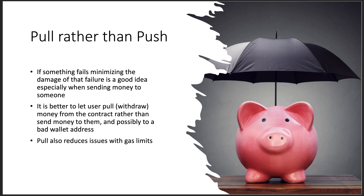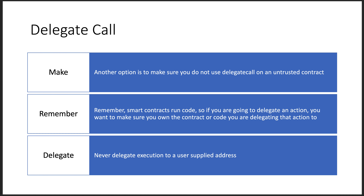Pull rather than push: pull is interesting because it minimizes the damage of failure. It's a good idea, especially when sending money to somebody — have them pull it from you rather than you pushing it to some wallet or blacklist. It is 100% better to let the user pull or withdraw money from the contract rather than send money to them, especially if it's a bad wallet address, because there are no refunds. This also reduces issues when you hit gas limits. Always use pull when you've got your contract working.